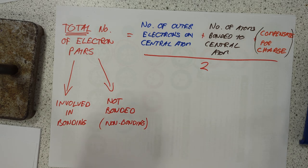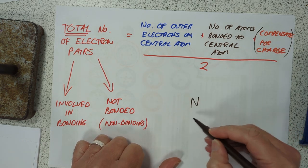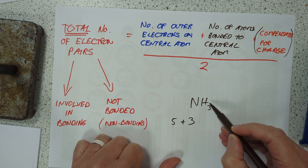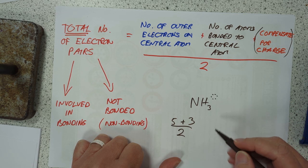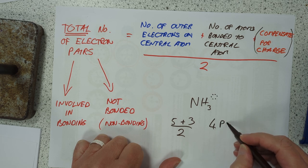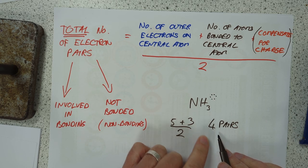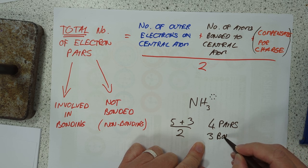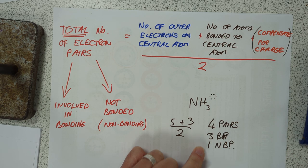Probably easiest if we took a look at an example. And a classic example of this would be ammonia. So we have got our nitrogen atom. It has got five outer electrons, and it is bonded to three things, three hydrogens, plus three. It's a molecule, so it has no charge. We don't need to worry about this. So five plus three over two gives us a total of four pairs of electrons. Now that is the total number of pairs. We can see only three of these are involved in bonding, and the fourth one must be a non-bonding pair. So four pairs, that's three bonded pairs, I'll just put BP if you don't mind, and one non-bonding pair of electrons. That is, well, so what? Where does that take us?